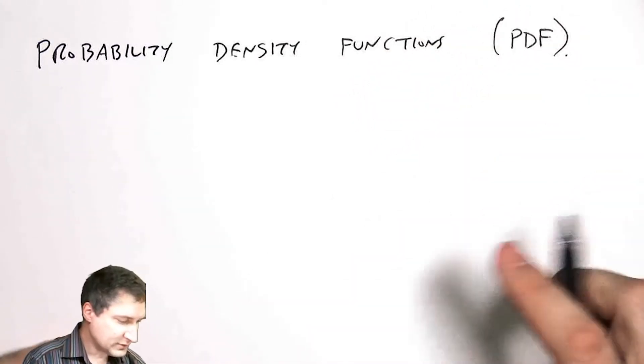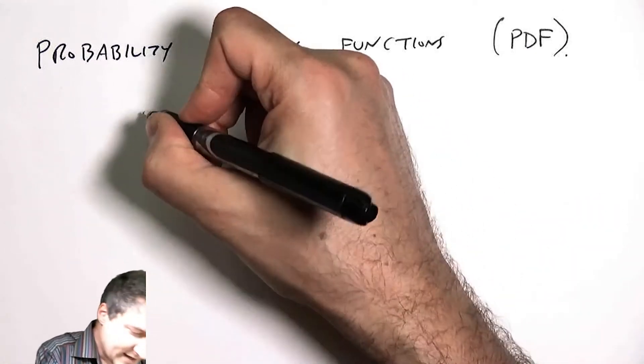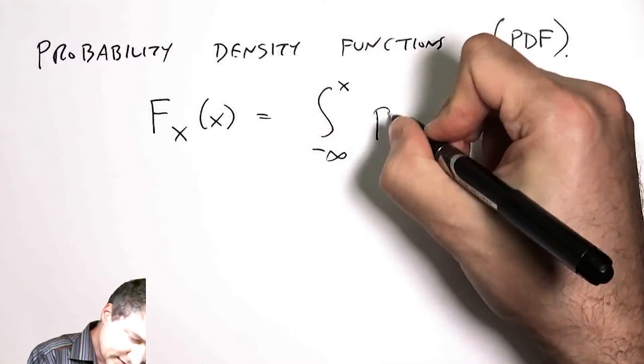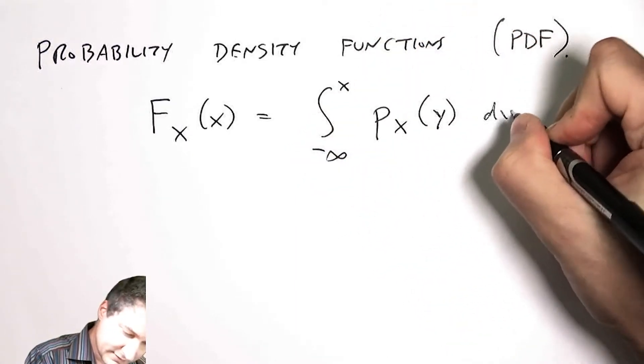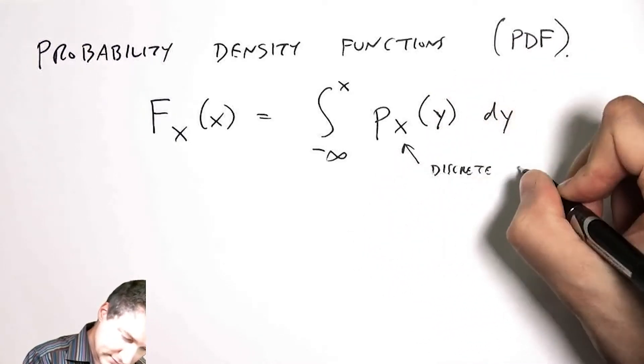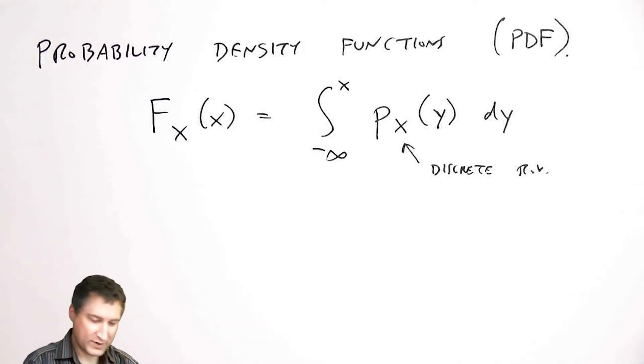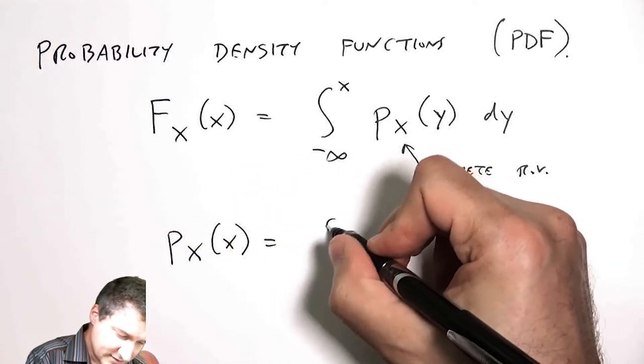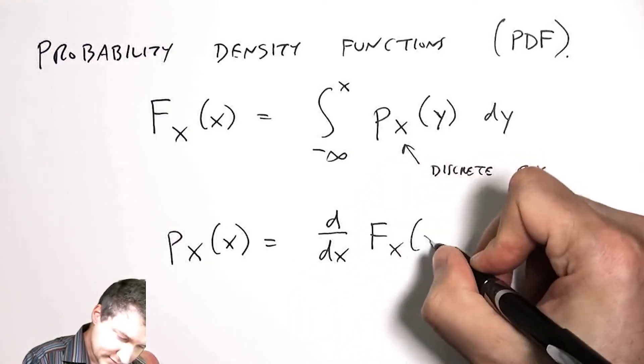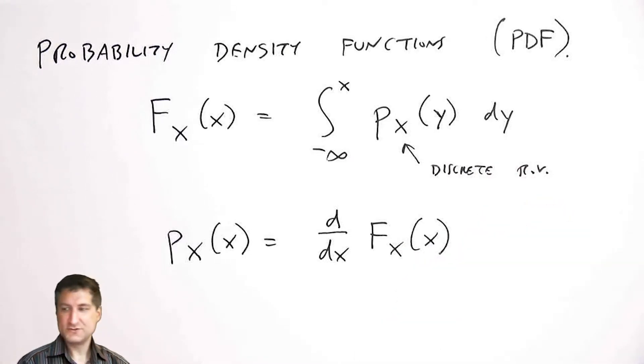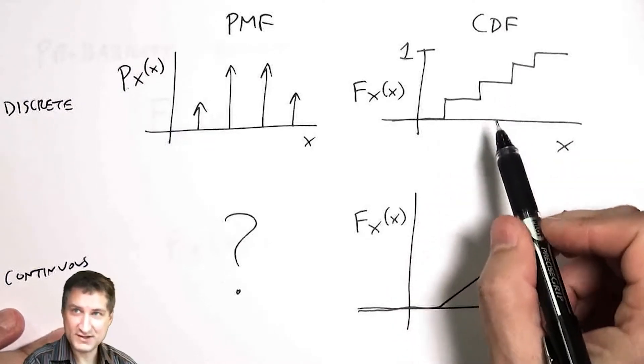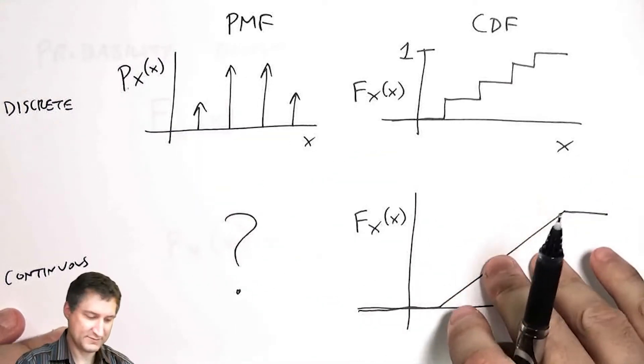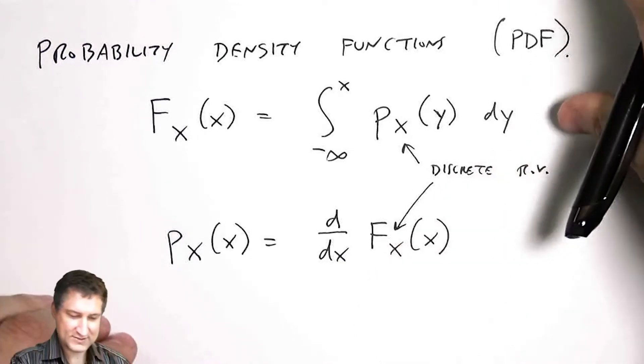Remember that we defined the CDF as the integral of the PMF in the world of discrete random variables, and in the same way the PMF would be the derivative of the CDF at a given point. When I have a stair-steppy type of CDF, the derivative is zero almost everywhere except for the places where it jumps up by a certain value, and that gives me the impulse function as the derivative.